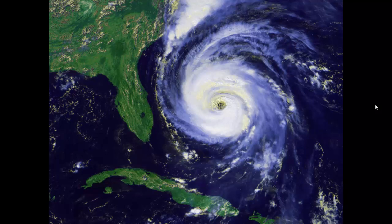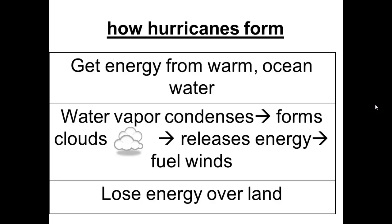Here you see a satellite picture of a hurricane forming in the Atlantic Ocean. Hurricanes get their energy from warm ocean water. When water vapor from the ocean condenses, it releases energy. Under the right conditions, this energy builds and drives the wind of a hurricane. Once it is over land, the hurricane's energy is reduced. Even though the swirling winds of a hurricane are not as fast as a tornado's winds, the winds of these ocean storms are more destructive.